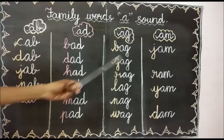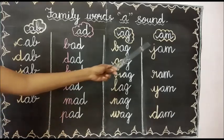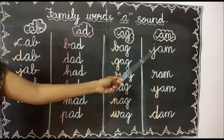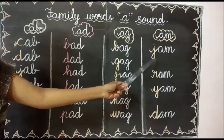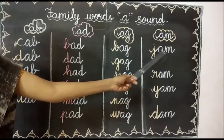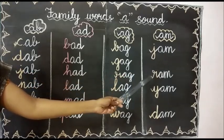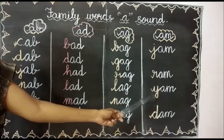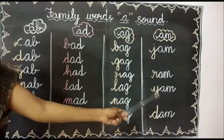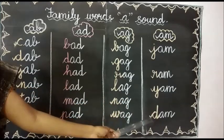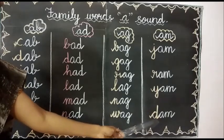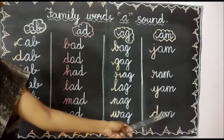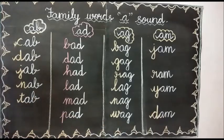Now we are going to see the AM family. First one: jam. J-am, jam. Next one: ram. R-am, ram. Next one: yam. Y-am, yam. Next one: dam. D-am, dam. So far we have learned to read the words with sounds.